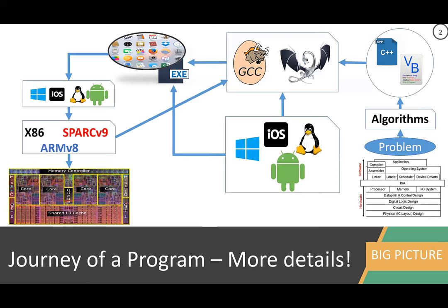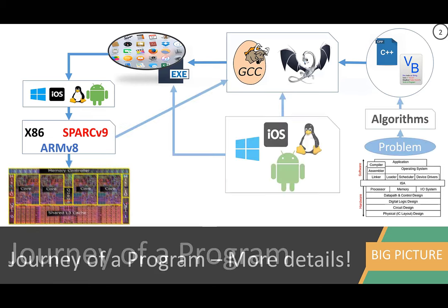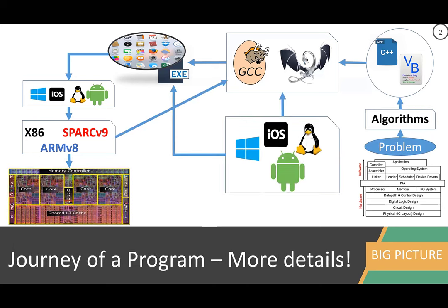There are some more details. For example, the compiler would require some knowledge about the operating system as well as the hardware itself, because a compiler running on a Windows machine using an Intel processor would generate a different executable than a compiler running on Linux using an AMD or ARM machine. So the compiler requires knowledge about the OS and the instruction set or hardware — it's not just a sequential waterfall process; it's a feedback process.